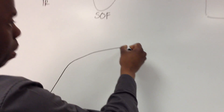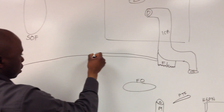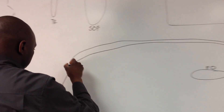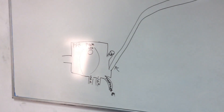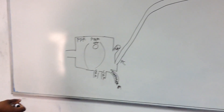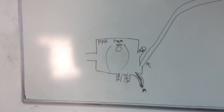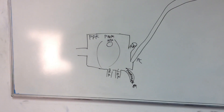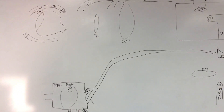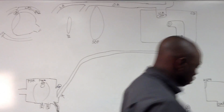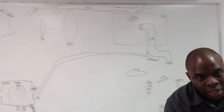The pterygoid canal is going to climb up and find its way to the anterior portion of foramen lacerum. And with that, those are all the structures for the head and neck which are going to be involved in transmitting the autonomic nervous system.